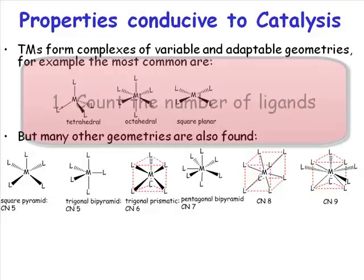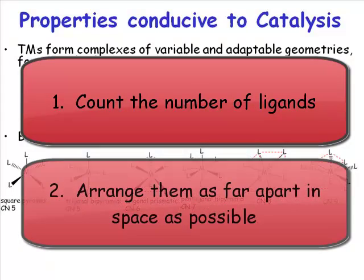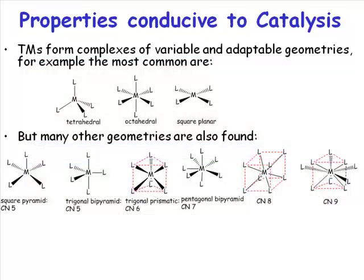Generally, in transition metal chemistry, just count the ligands and arrange them in space as far apart as possible. So using the kind of skills that you learn in VSEPR, but without a preoccupation for lone pairs.